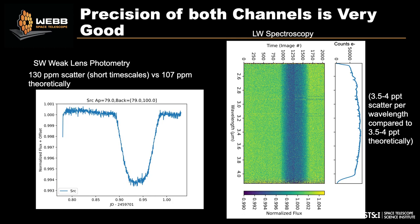The performance of the grism time series mode is just excellent. On the left is the photometry from the weak lens aperture. The theoretical error was 107 parts per million and on short timescales the scatter is 130 parts per million — we're very happy with that. On the right is the long wavelength grism, where the scatter at pixel resolution matches the theoretical limit and measured error exactly. Overall we're very pleased with these modes.